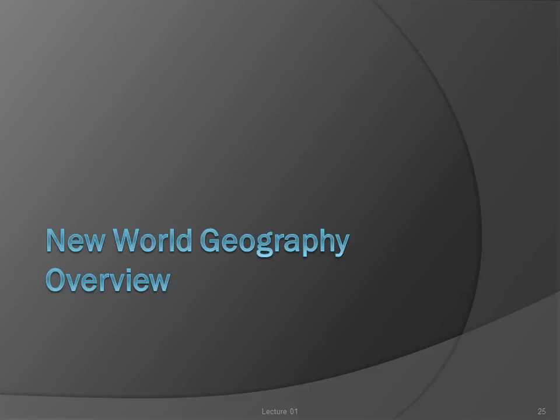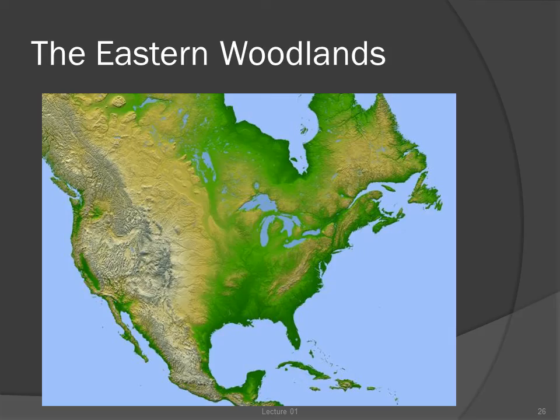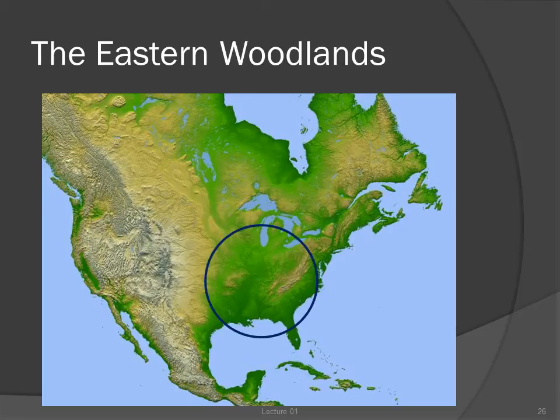Let's start with a quick discussion of the environment and geography of the regions we're looking at. The boundaries of the eastern woodlands are very much open to debate, but generally stretch from the Gulf of Mexico to the Great Lakes and from the Great Plains to the Atlantic coast.